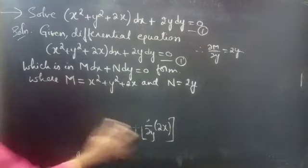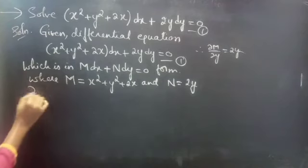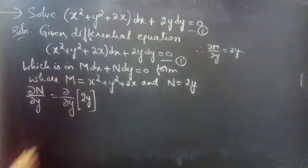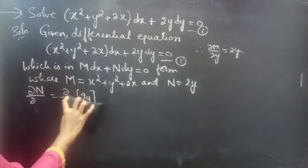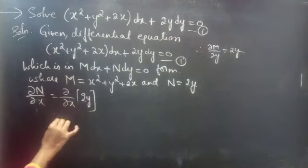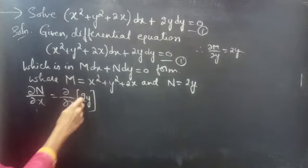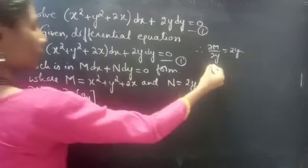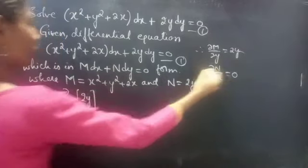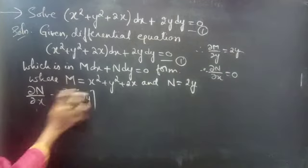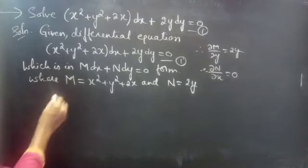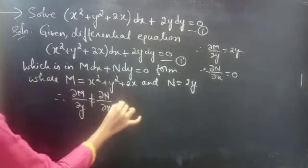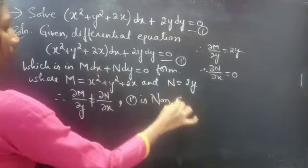Now let's find the partial derivative of N with respect to x. Since we are doing partial derivative with respect to x, y will be treated as constant. So 2y is constant, and the partial derivative of a constant with respect to x is 0. It is clear that the partial derivative of M with respect to y is not equal to the partial derivative of N with respect to x. Therefore, dou M/dou y ≠ dou N/dou x, so equation 1 is non-exact.